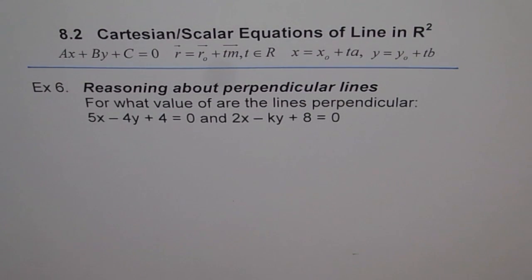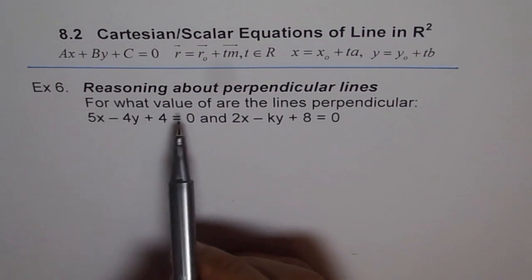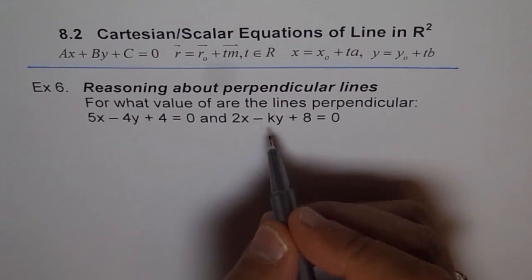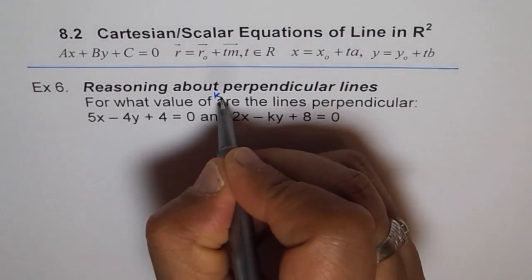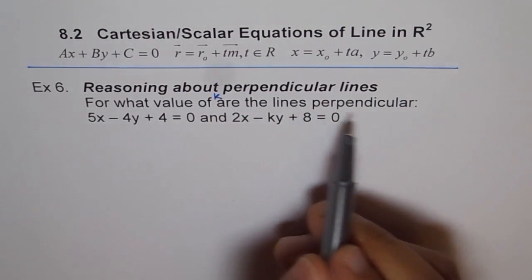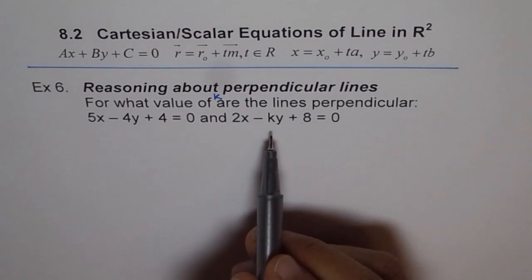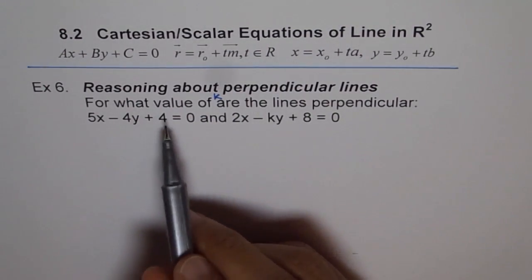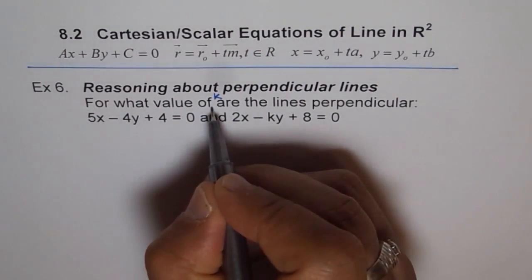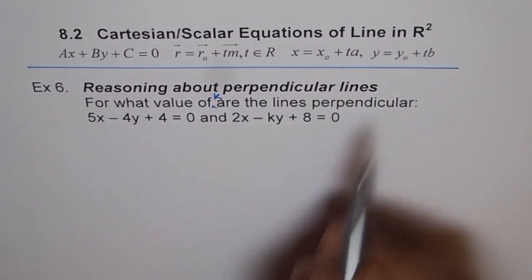Example 6. Reasoning about perpendicular lines. For what value of—I missed k—for what value of k are the lines perpendicular? This variable is a constant or a coefficient. For what value of k are the lines perpendicular?